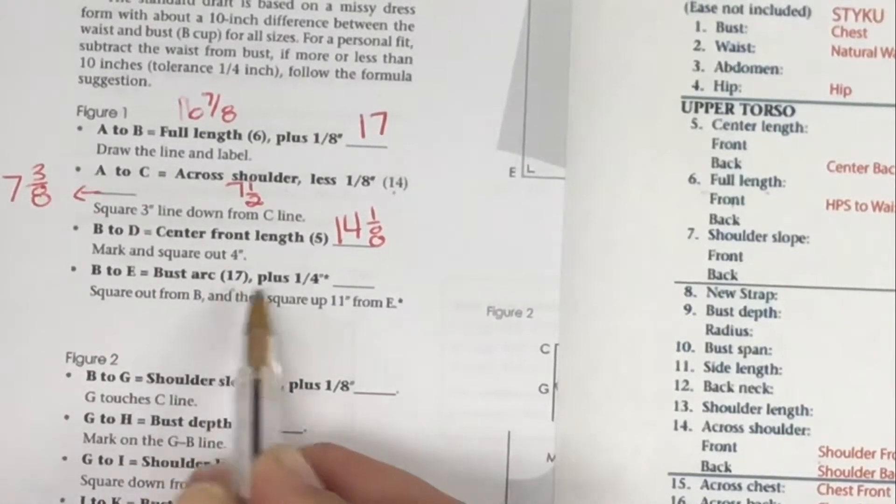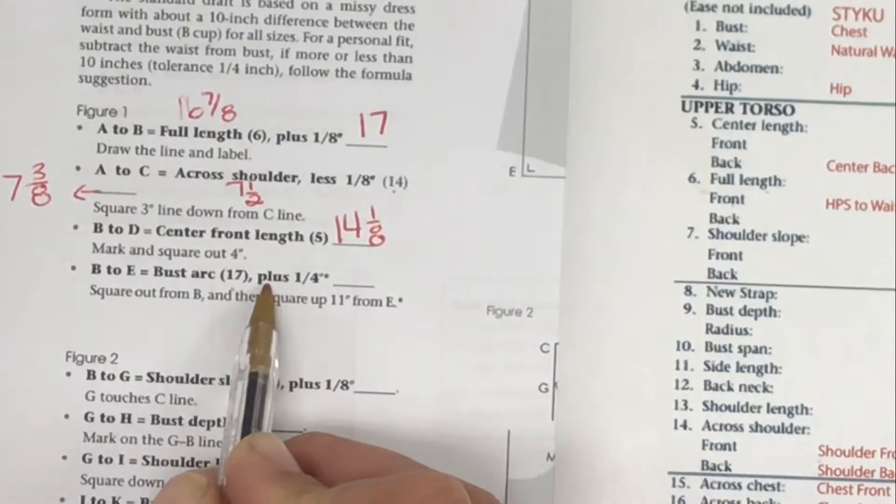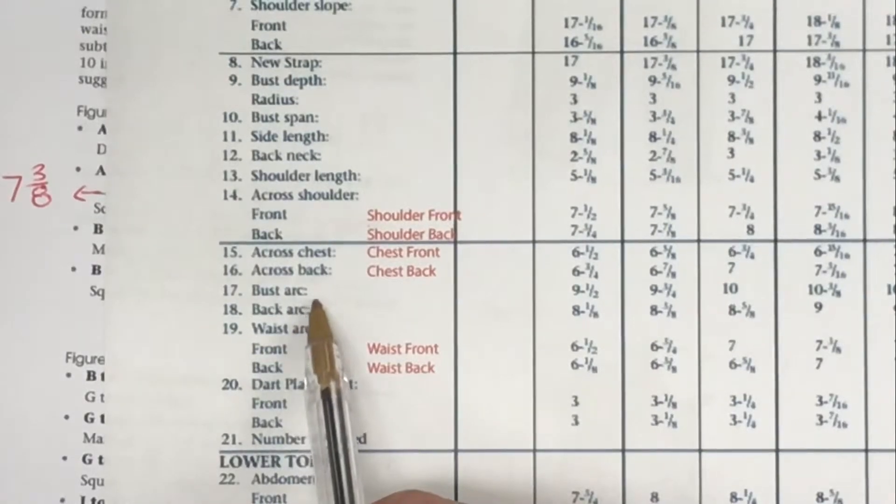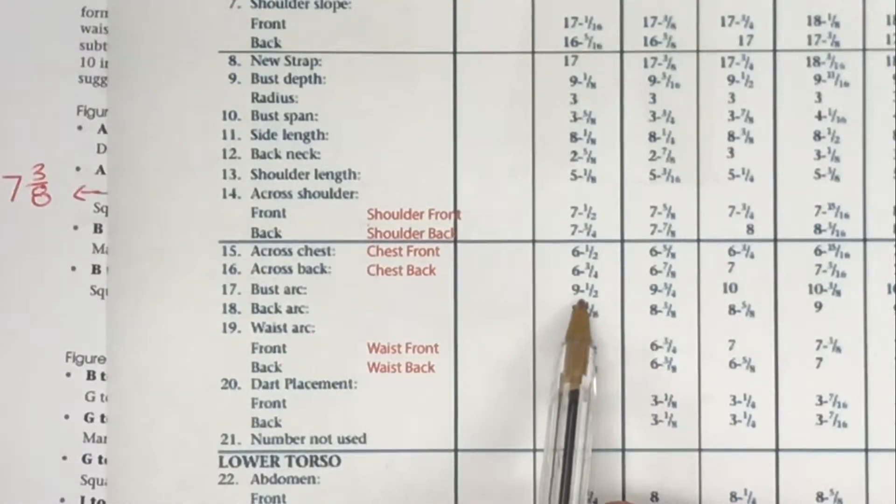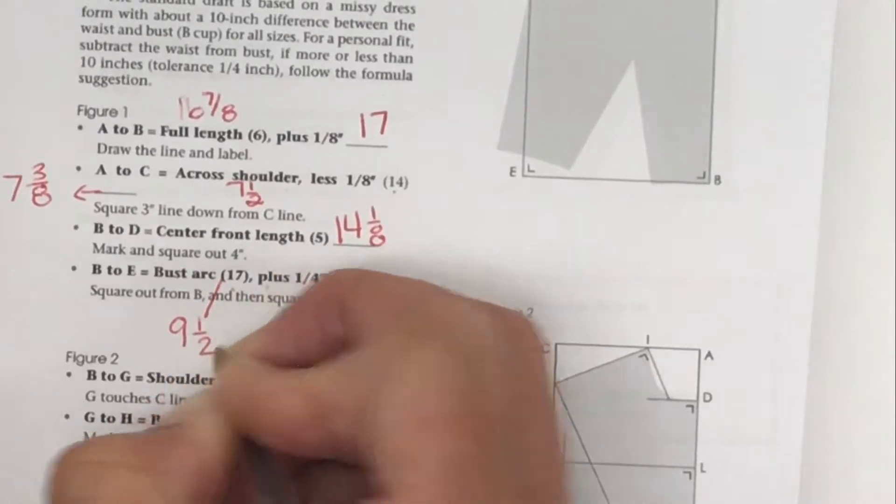BDE is going to be our bust arc, which is number 17. We have math again. Number 17, let's look. Bust arc, we don't have to worry about front or back, it's 9 and 1/2. Let's write that: 9 and 1/2 plus 1/4.